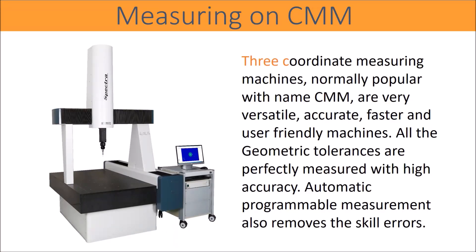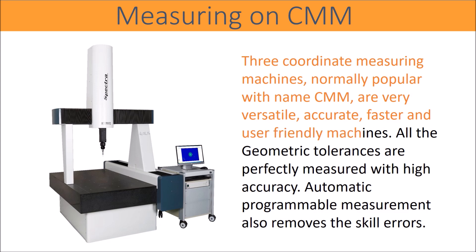Three-coordinate measuring machines, normally known as CMM, are very versatile, accurate, faster, and user-friendly machines. All geometric tolerances are perfectly measured with high accuracy.